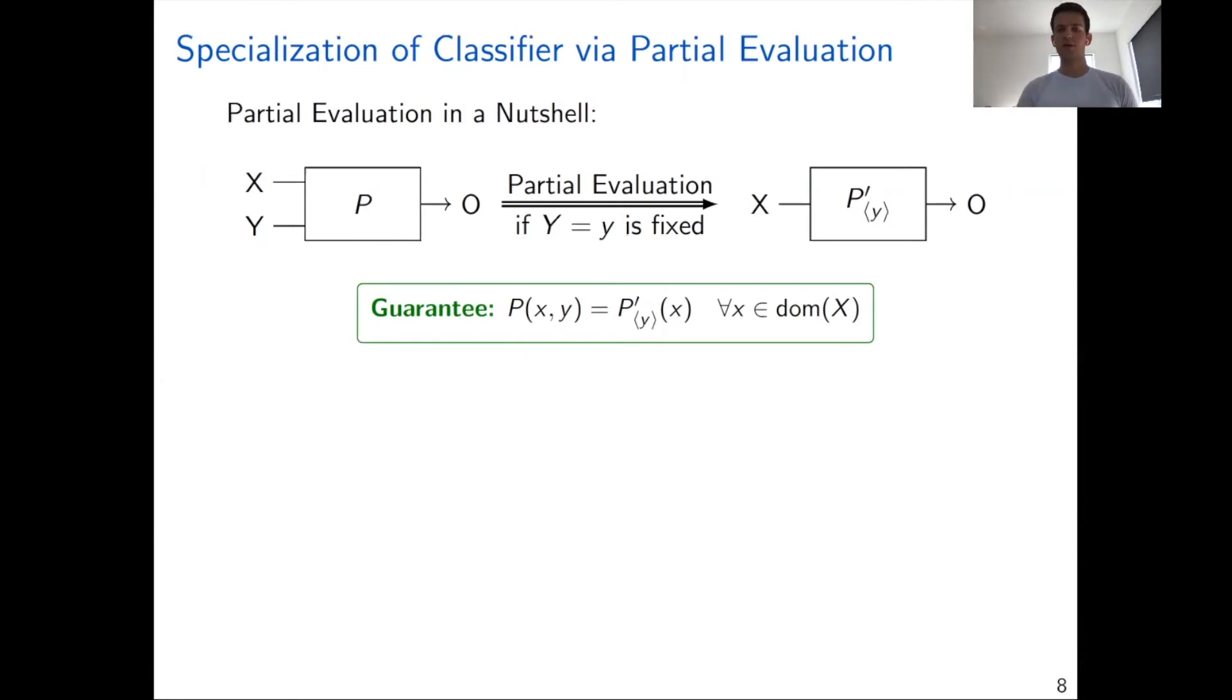This example here explains what partial evaluation does in a nutshell. Consider a program p that has two inputs x and y. If we know that the input y is always equal to some constant, then we specialize this program p to a more efficient program p prime that is specialized to this particular y value and takes only a single input x. There is a guarantee that p and p prime will always produce the same output for all values of x. We use this technique for the classifier in Gecko because once we compute the explanation, the classifier is already learned and it is essentially a static program.